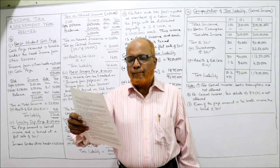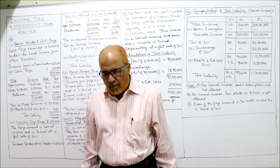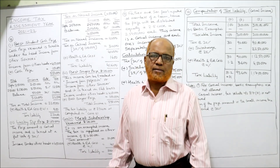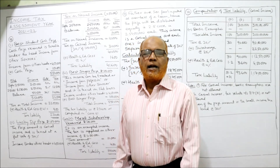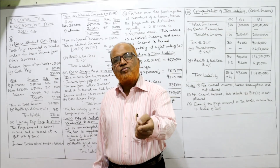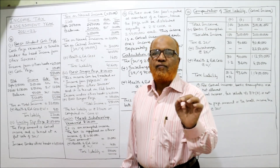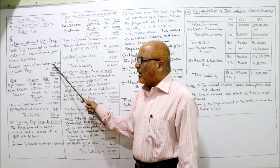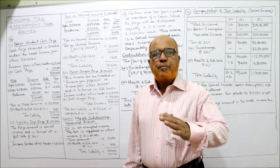Situation 1: Best student cash prize of 1,00,000 rupees. You have income under other heads of 4,50,000 and also received from the college a best student cash prize of 1,00,000. The Income Tax Act says a student receiving the best student cash prize is taxable under income from other sources. So the total income will be 4,50,000 plus 1,00,000 = 5,50,000, and tax will be calculated on 5,50,000.